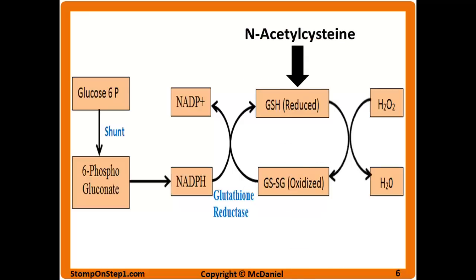Excessive amounts of acetaminophen — such as in patients who attempt to use it for suicide — is metabolized by the liver into intermediates that bind to and remove glutathione. This reduction in glutathione means free radicals build up and damage liver cells. The treatment for acetaminophen overdose is N-acetylcysteine, which is the precursor to glutathione — so giving N-acetylcysteine generates more glutathione to compensate.